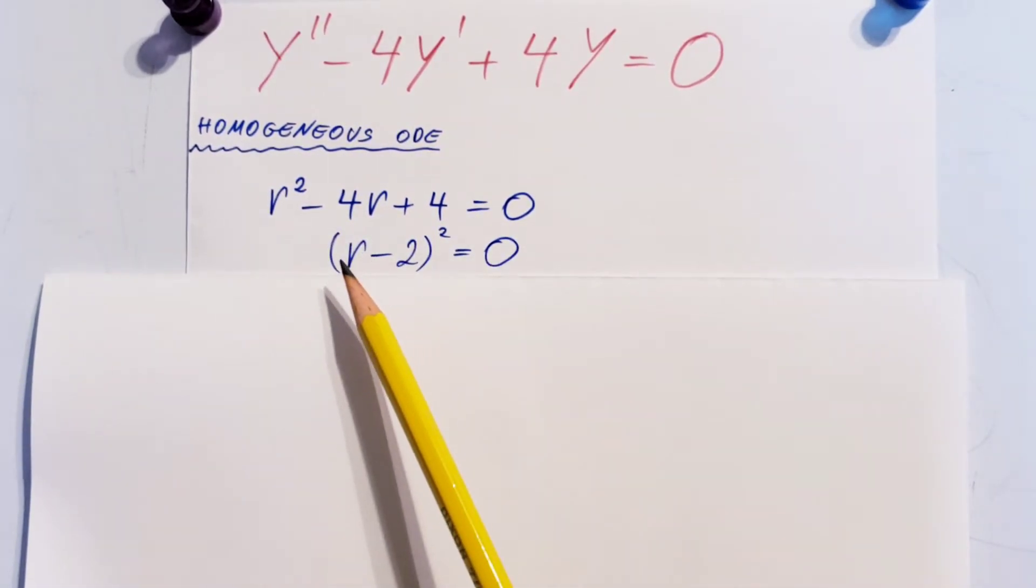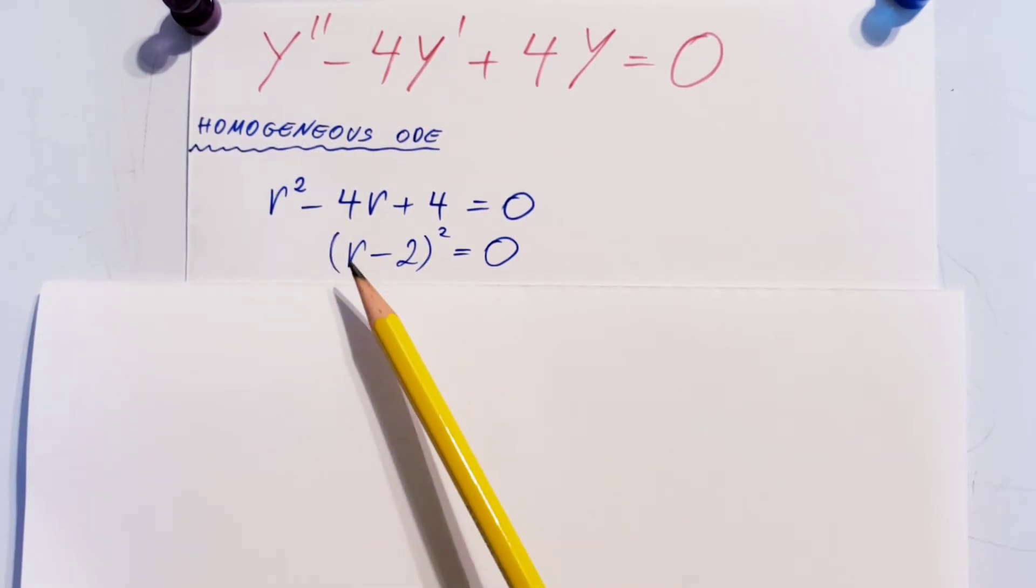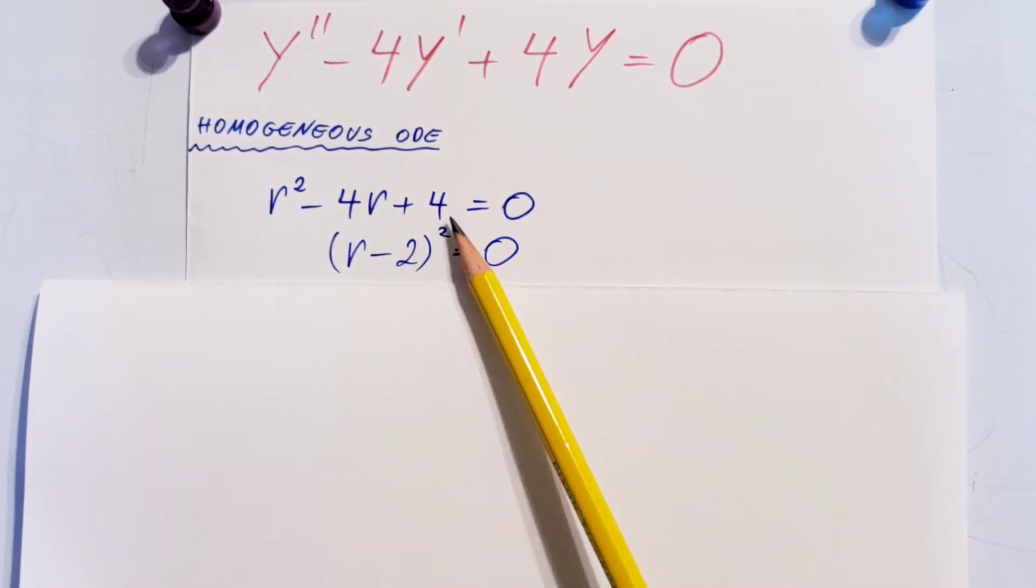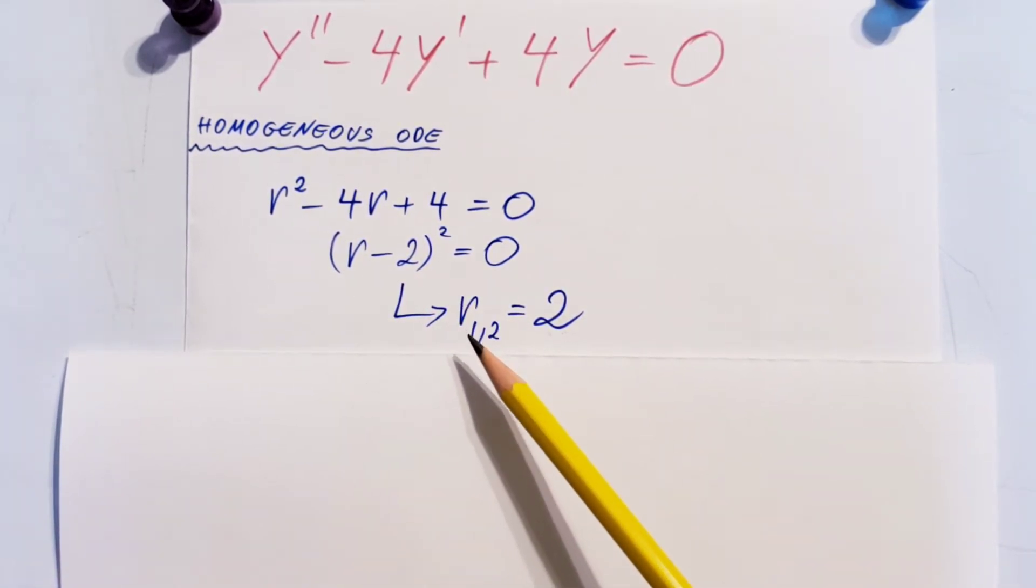From here you can either use the quadratic formula or factor it: (r - 2)² = 0. This gives us our two roots r₁ and r₂ equal to 2.